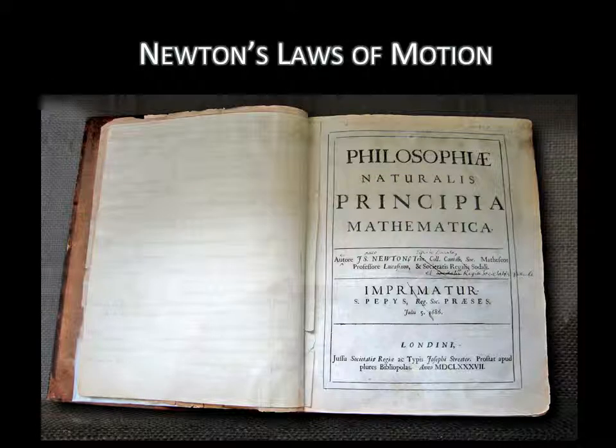We could spend the whole semester talking about Isaac Newton and his work. He published his laws of motion and gravity in 1687 in his book, Mathematical Principles of Natural Philosophy, or his Principia. His laws govern the motion of everything, from our daily movements on Earth to the movements of stars, planets, and galaxies throughout the universe.